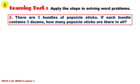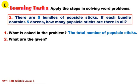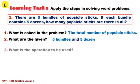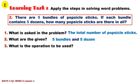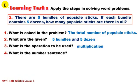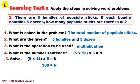There are five bundles of popsicle sticks. If each bundle contains five dozens, how many popsicle sticks are there in all? Number 1: What is asking the problem? What are the given? What is the operation to be used? What is the number sentence? Solution: 5 dozen times 12 times 5 equals 300. 300 popsicle sticks.